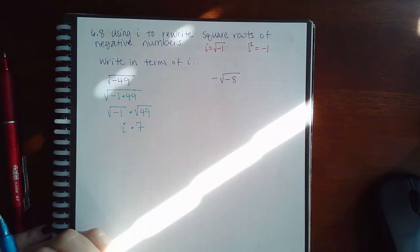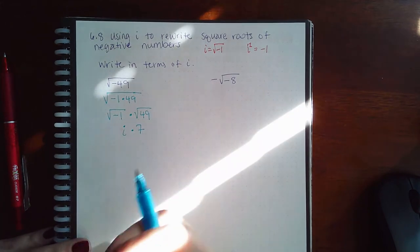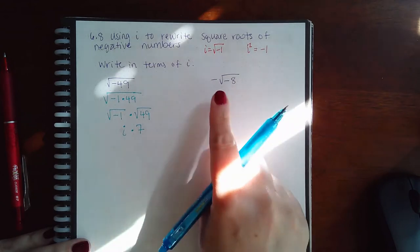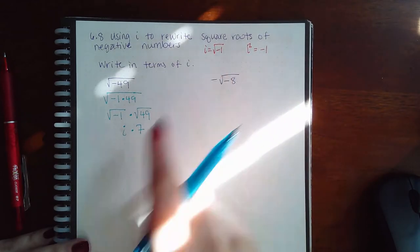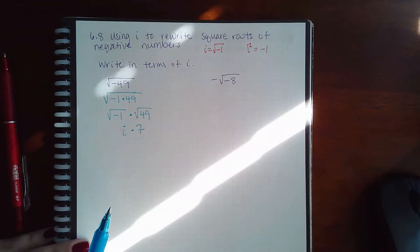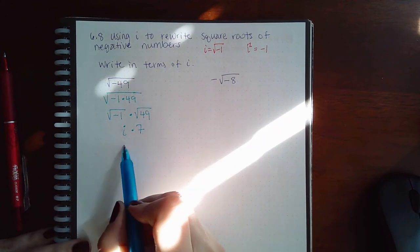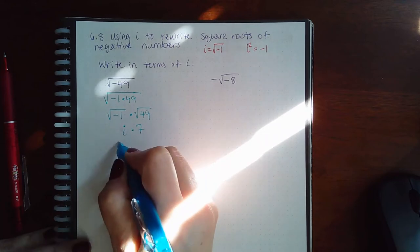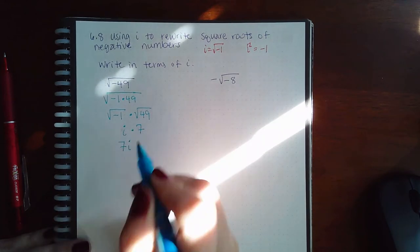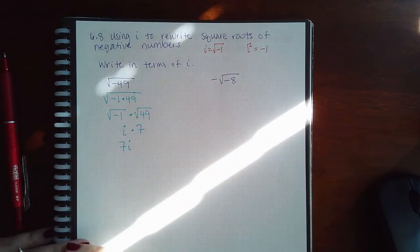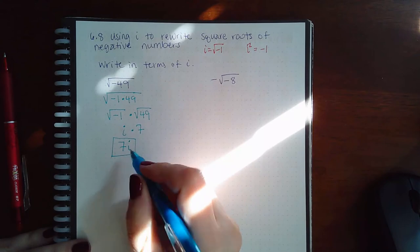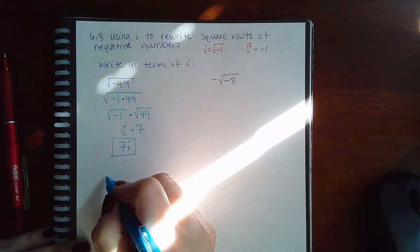Now think of i like a variable, but it's not really a variable because it equals a number—it equals the square root of negative one. But normally when we have letters involved, we usually like to write the coefficients in the front next to the variable, so we usually like to write it like this: seven i. Now there is a shortcut to getting to that response.